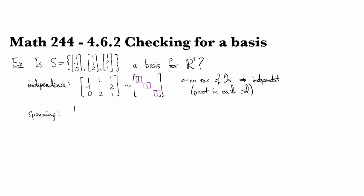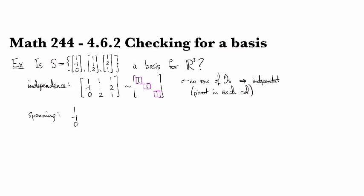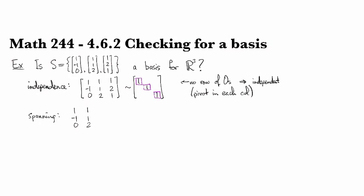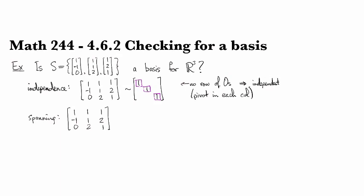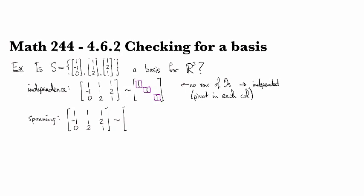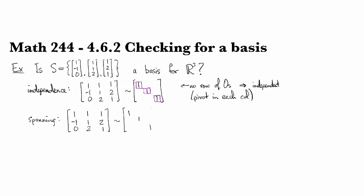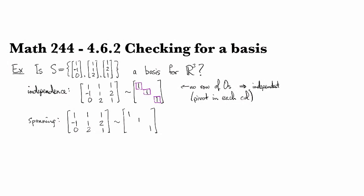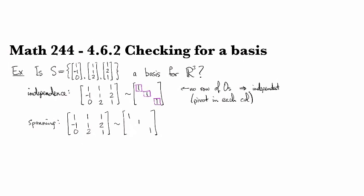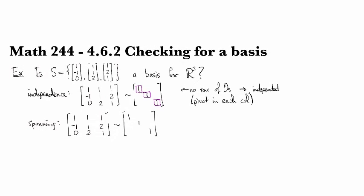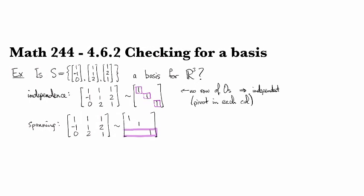So I look at [1, -1, 0], [1, 1, 2], and [1, 2, 1]. And when I row reduce and get the identity, this time what I'm noticing is that I have no row of zeros right here.